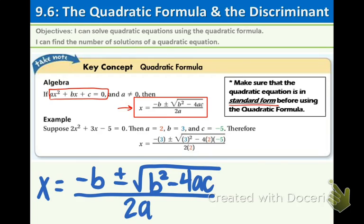Suppose that 2x squared plus 3x minus 5 equals zero — find the solutions. What you do is you line up a, b, and c, and then you easily know that a is 2, b is 3, and c is negative 5. Once you identify your a, b, and c, it's simply just plugging into the formula and then doing your operations using the order of operations. In example one, we will be seeing how this works.